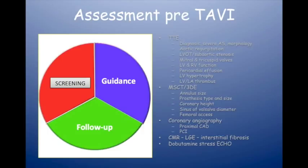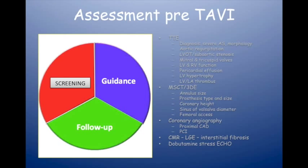Multi-slice CT is used to size the annulus. The annulus size determines the size and sometimes the type of prosthesis we use. We need to know the height between the aortic annulus and the coronary arteries — especially the left main coronary artery, which is usually lower than the right. With TAVI, we don't take the old valve out; we put the new valve inside the old valve and push the leaflets aside. If the leaflets are long or bulky enough, they can occlude the coronary arteries.